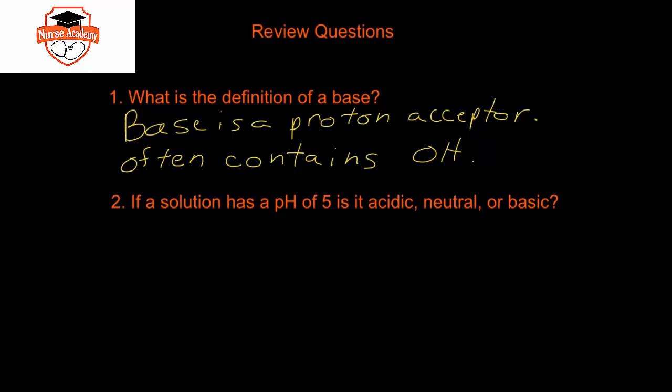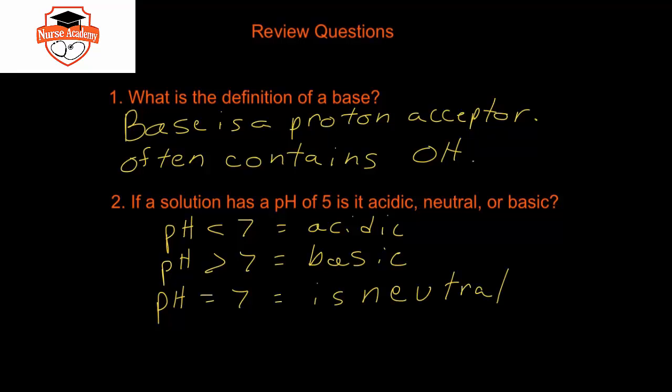In the second question, if a solution has a pH of 5, is it acidic, neutral, or basic? So, a pH less than 7 is acidic, a pH greater than 7 is basic, and a pH equal to 7 is neutral. So, in this case, a pH of 5 is less than 7, so it is acidic.